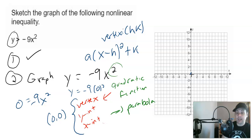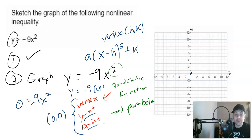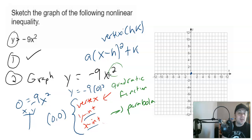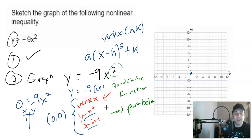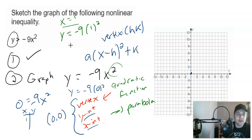Since all key information leads back to (0, 0), we need more points. Just pick a value for x — I'll pick x = 1 — and plug into the equation: y = −9(1)² = −9. So we get the point (1, −9). By the axis of symmetry, there's a mirror image point at (−1, −9) on the other side.